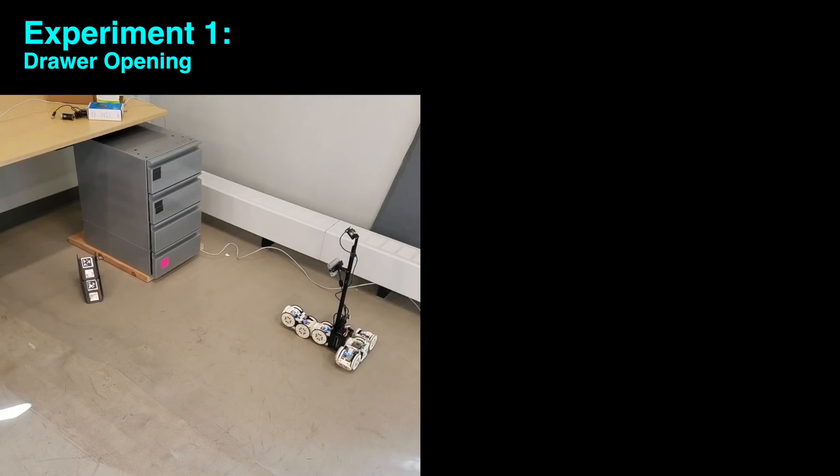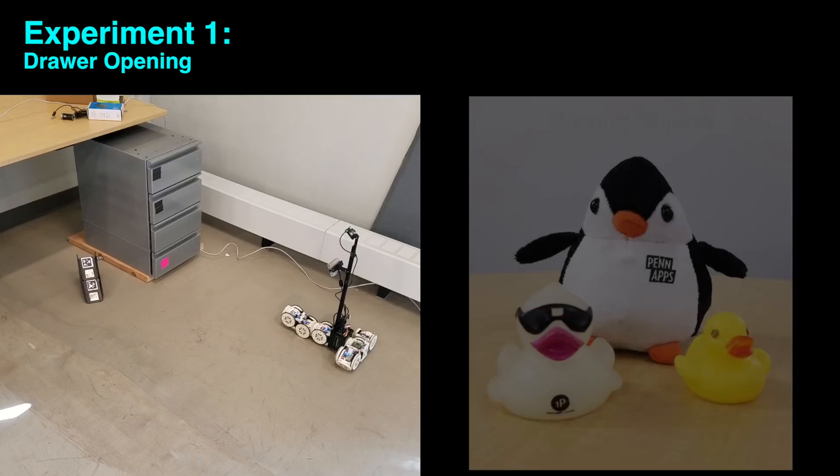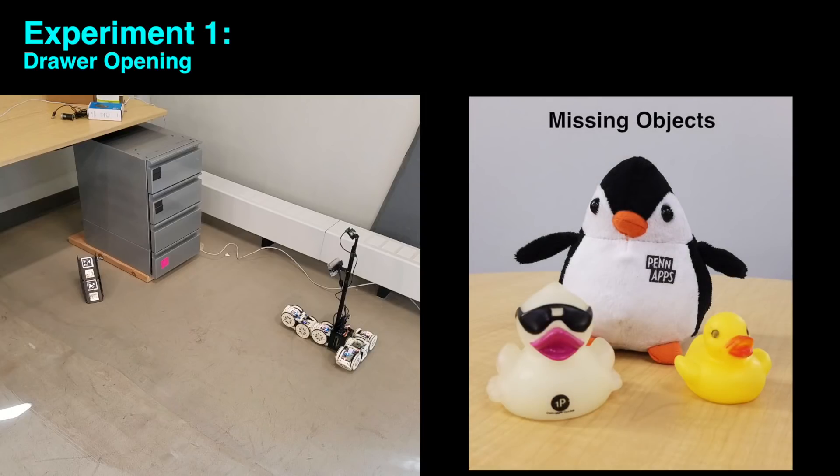In experiment one, the robot begins in an office with a desk and set of drawers. The robot is searching for some missing objects which might be inside the drawers. Its high-level task is to open the first drawer and if possible, climb on top of the first drawer, open the second drawer, and take a picture of what's inside.